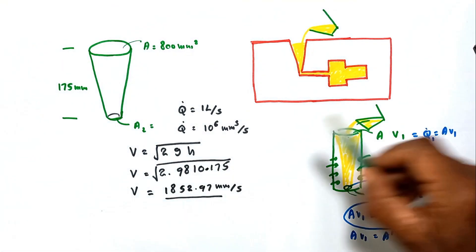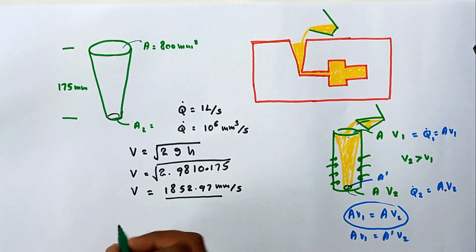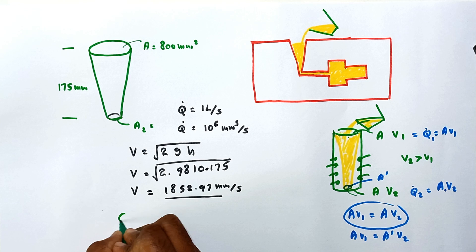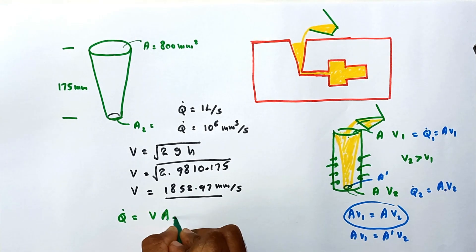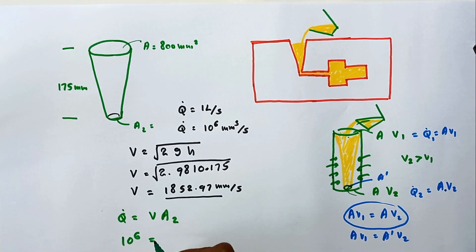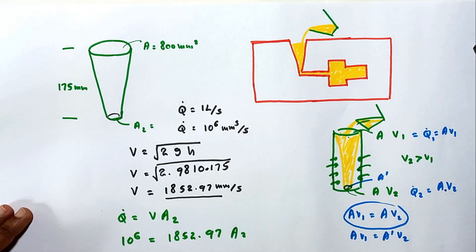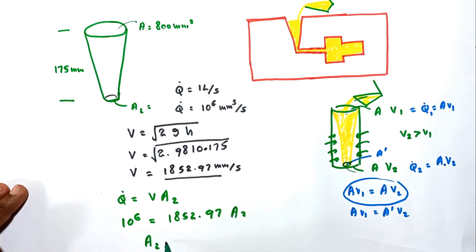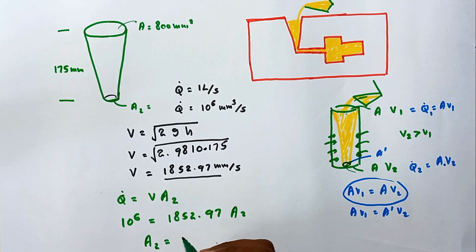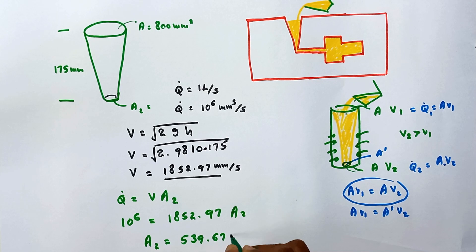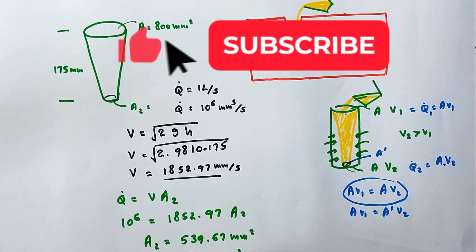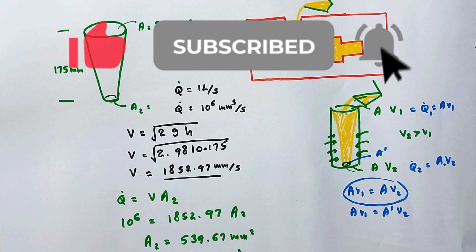Now that we know the flow rate and the velocity at the bottom, we can calculate A2. Using Q = v · A2, we get 10⁶ = 1852.97 × A2. Solving gives A2 = 539.67 square millimeters, which is approximately 540 square millimeters. This is the required base area of the sprue to avoid aspiration.